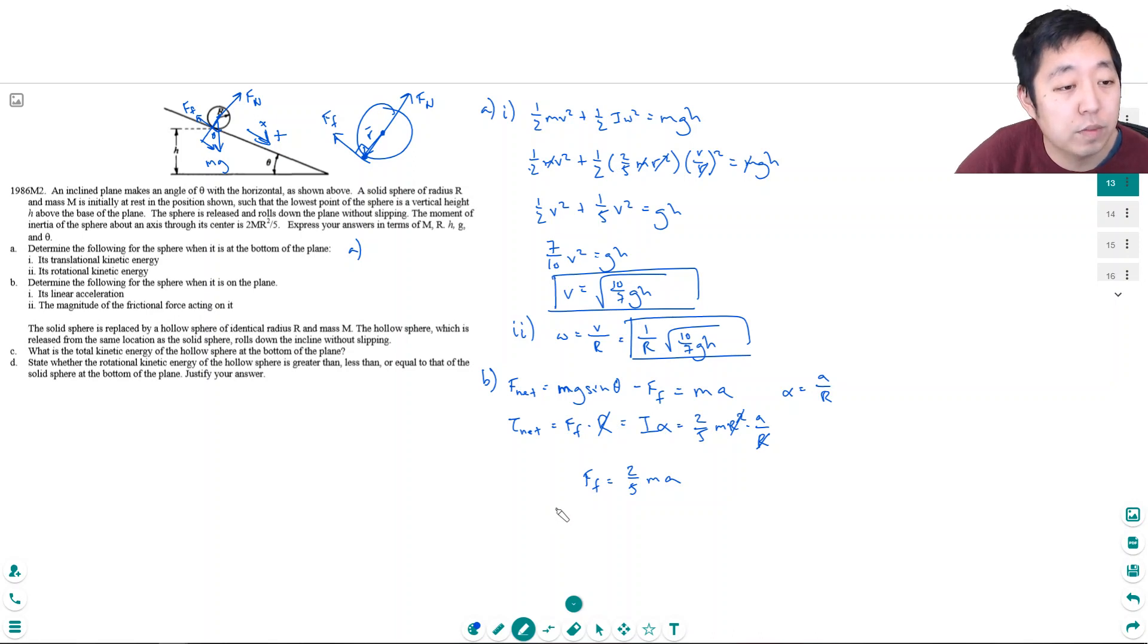So I can put that into this equation. I get, what am I trying to find first? I'm trying to find the acceleration first. So I have Mg sin theta minus two-fifths MA is equal to MA. So Mg sin theta, combining the MA terms, one plus two-fifths is seven-fifths MA. The M's cancel, and A would equal five-sevenths G sin theta.